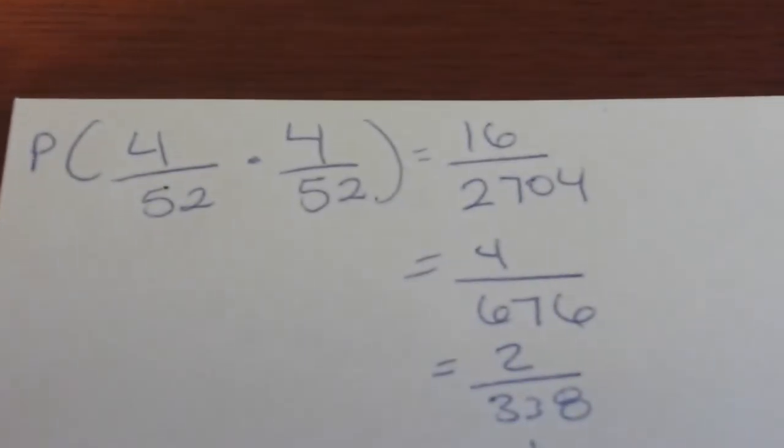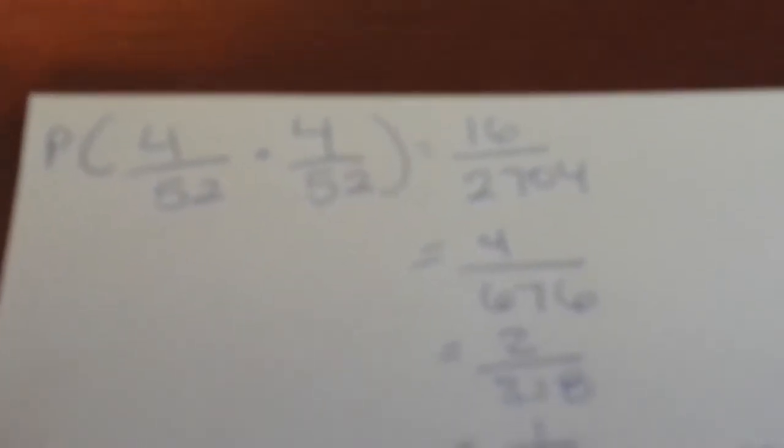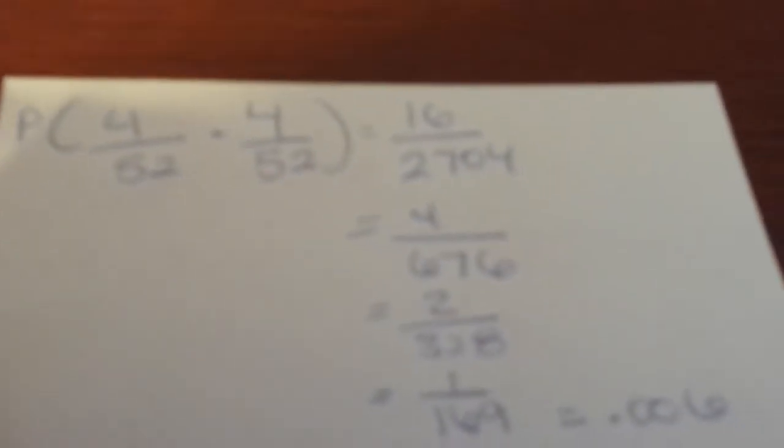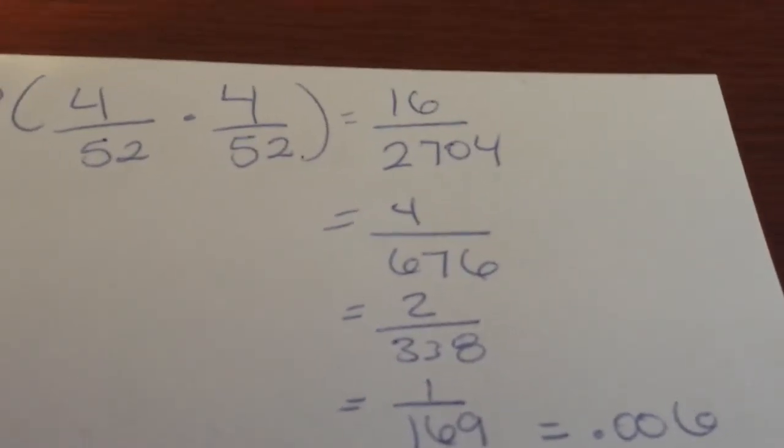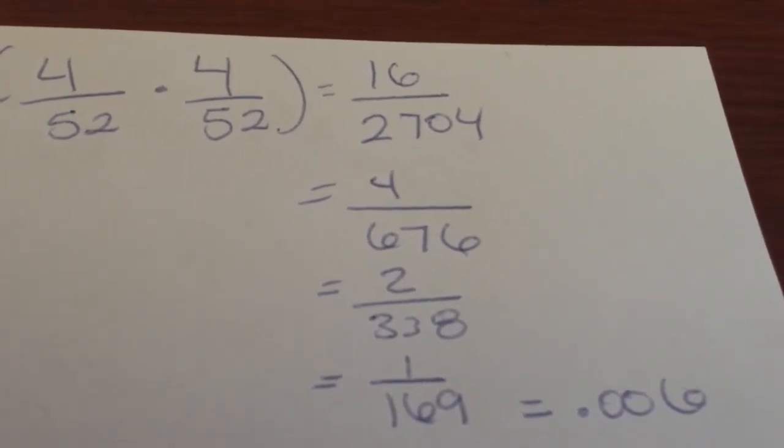So we take 4 over 52 times 4 over 52 since this time we can replace. That will give us 16 over 2704.